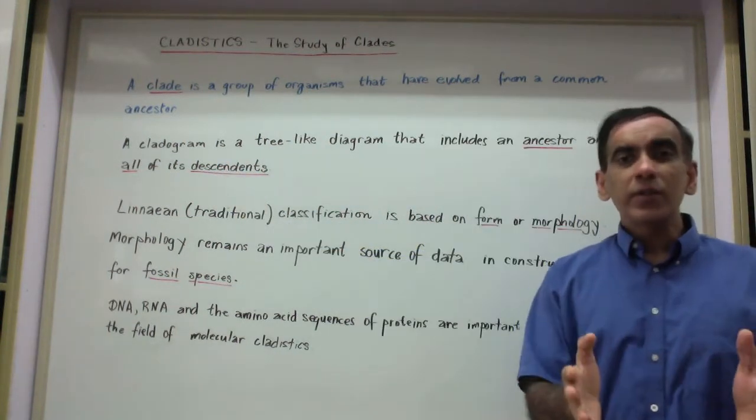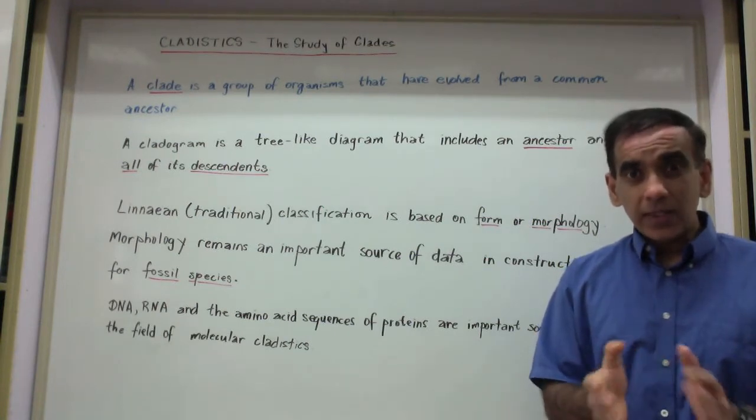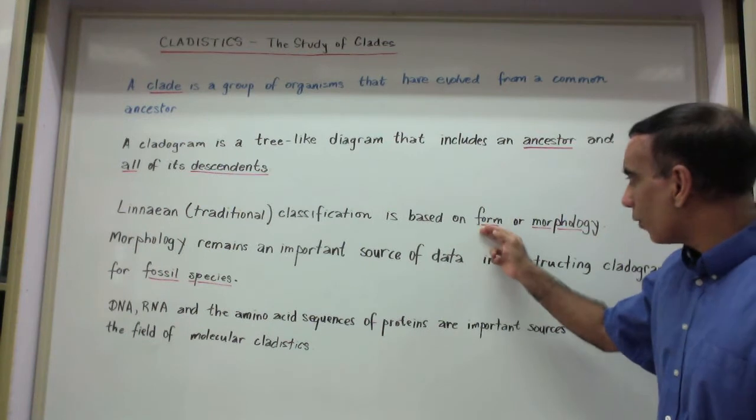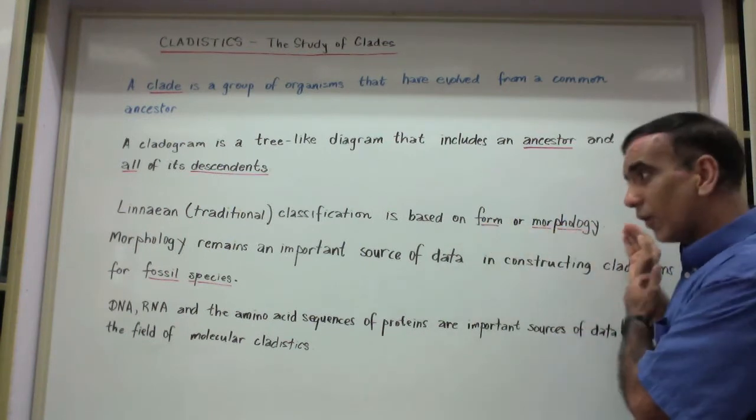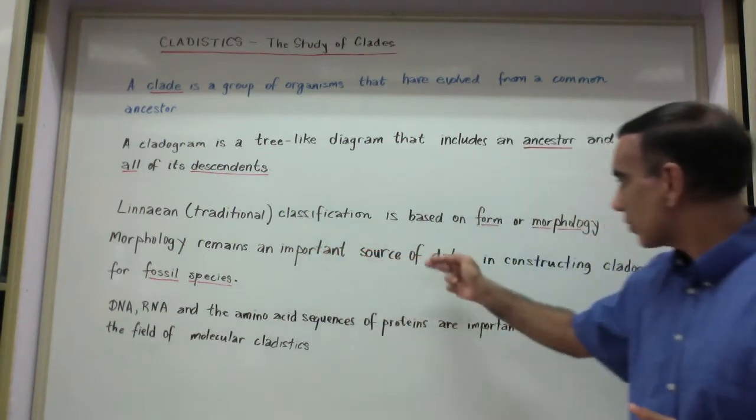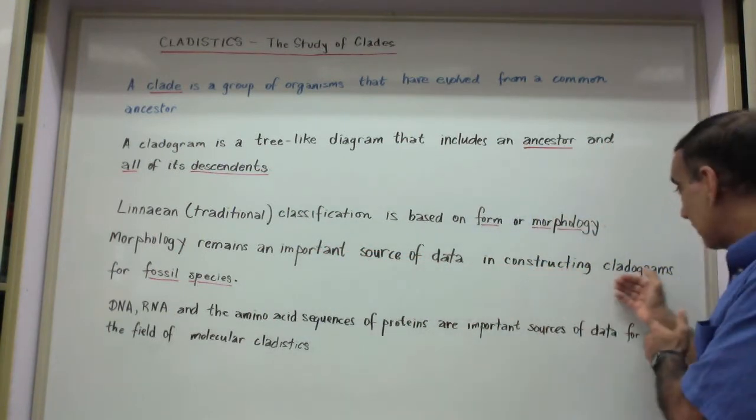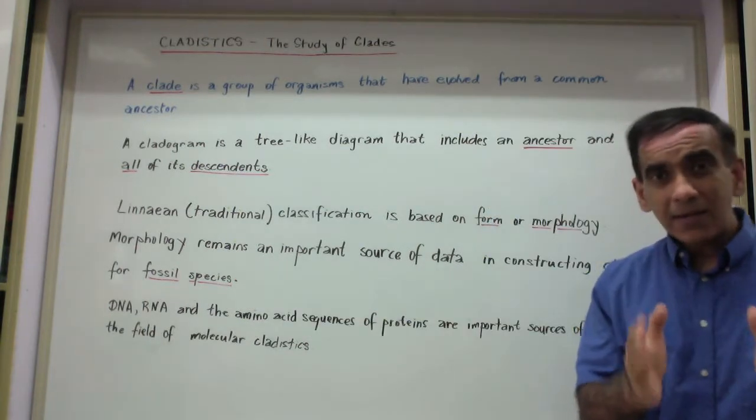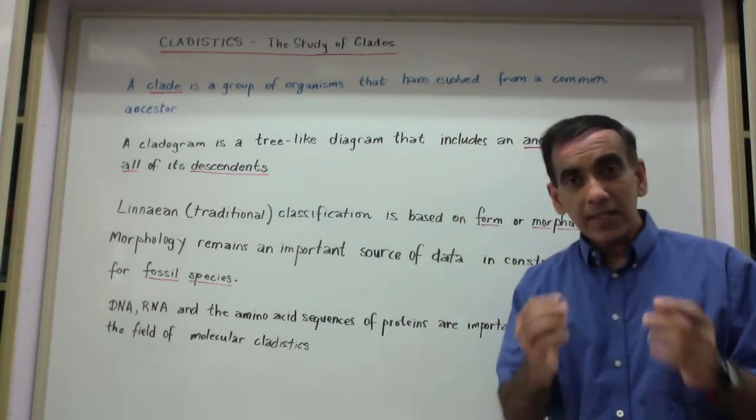The traditional classification system created by Carl Linnaeus is based on form or morphology. But today, morphology remains an important source of data in constructing cladograms for fossil species. With the advent of PCR and DNA sequencing techniques...